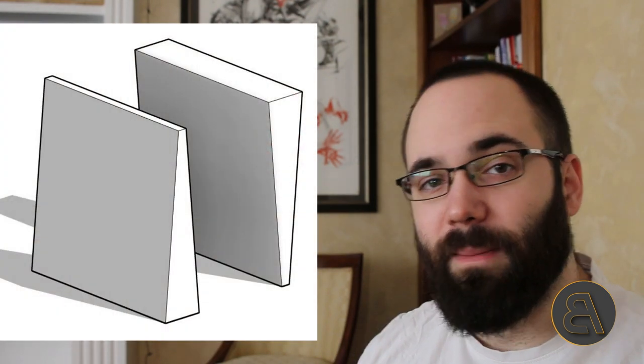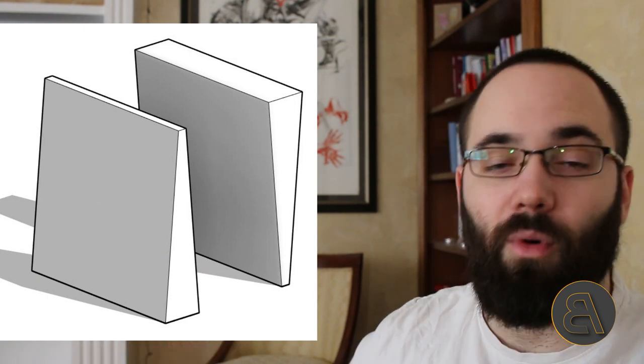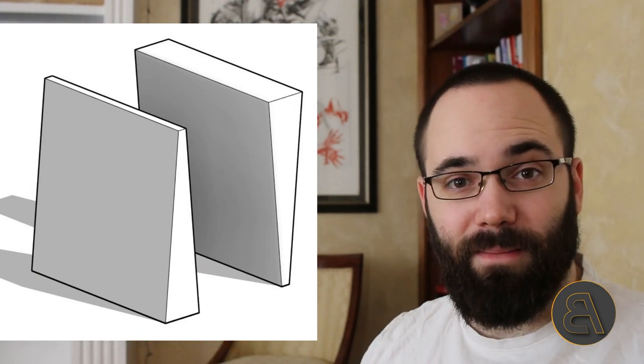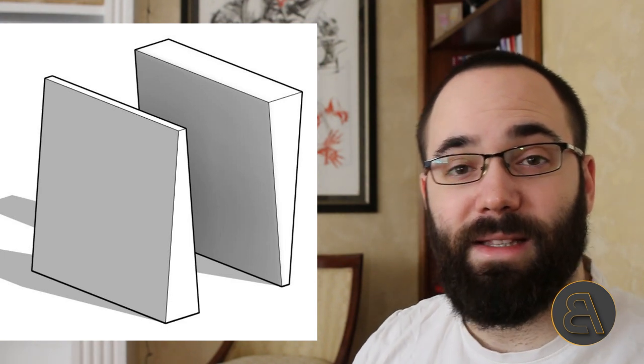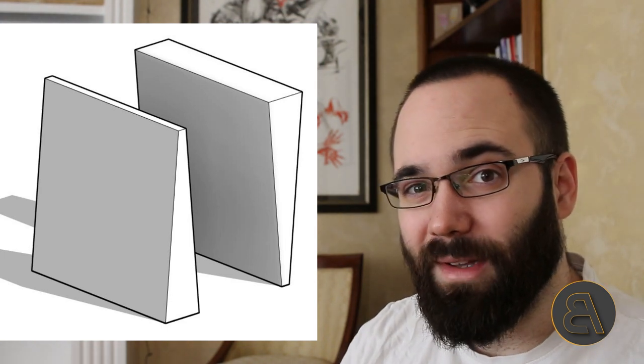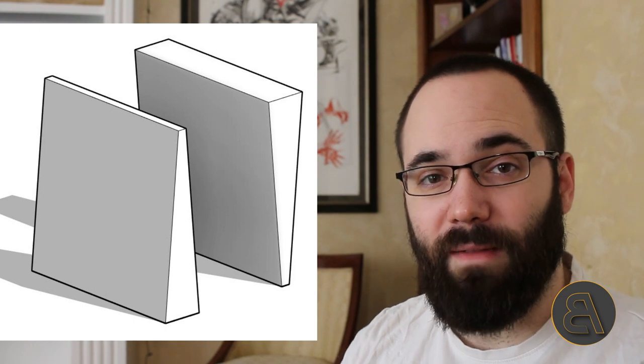What's going on guys, Balkan Architect here. In today's video we're going to be talking about tapered walls in Revit — walls that have a different thickness along the height, so it can be wider at the bottom and thinner at the top, or the other way around. It has some nice capabilities and it's really important, especially for the latest version of Revit.